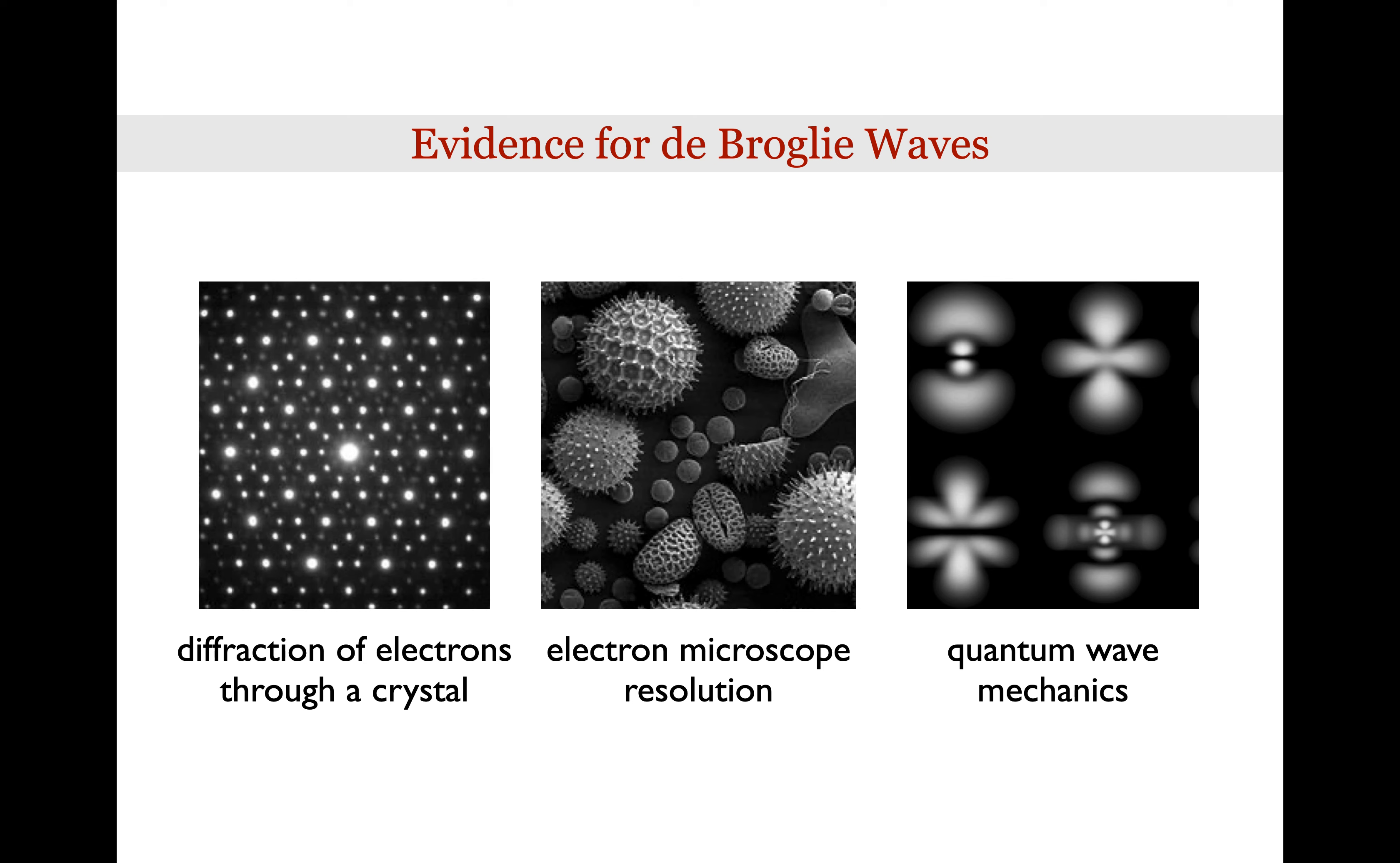The center image shows an electron microscope image of pollen grains. In electron microscope, electrons are basically treated as waves, and so you're using the electron waves to do the imaging like you would use light waves to do imaging in a regular microscope. And the right hand side is an illustration of electron orbitals in atoms. Some electron orbitals actually have been directly imaged using advanced techniques. But again, electron orbitals have been well-established experimentally, and so they are also evidence of the de Broglie wave or wave nature of electrons.